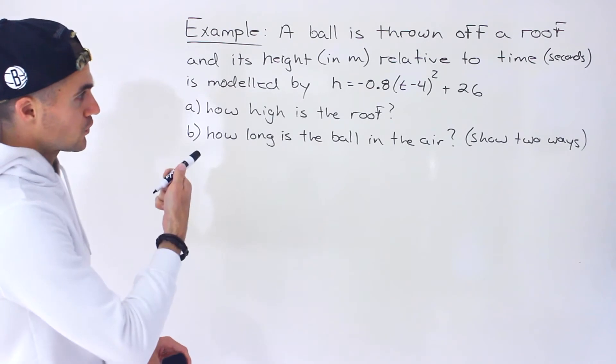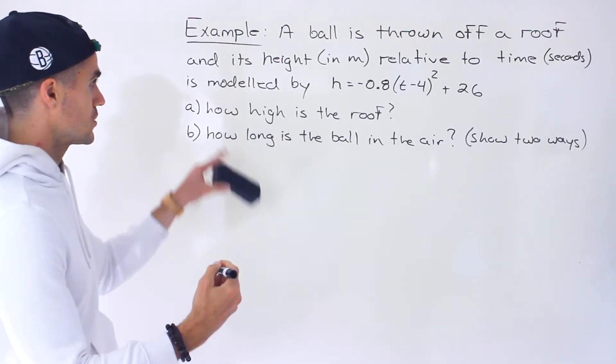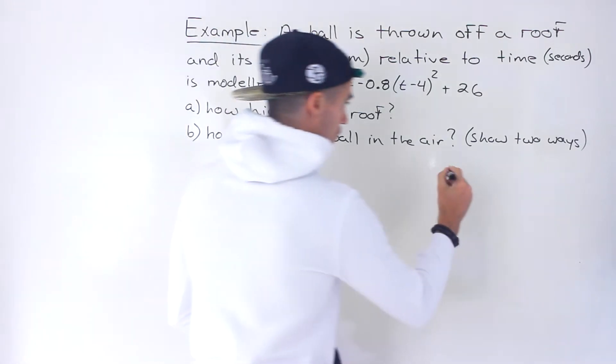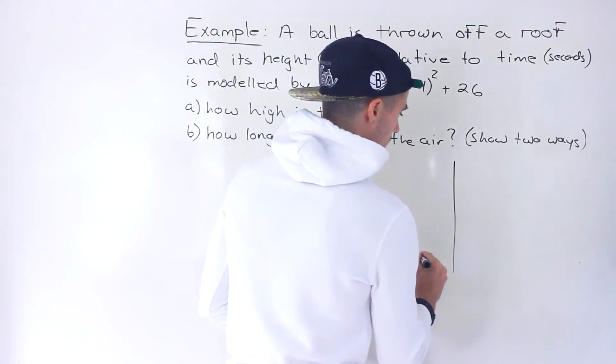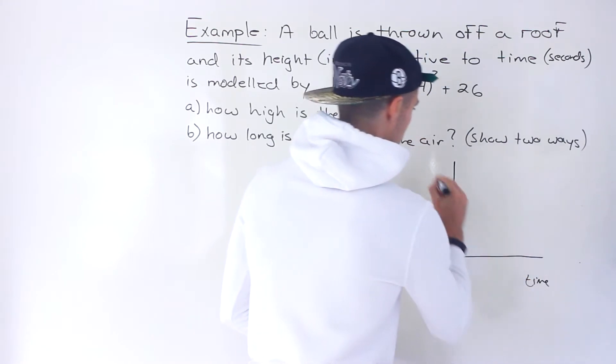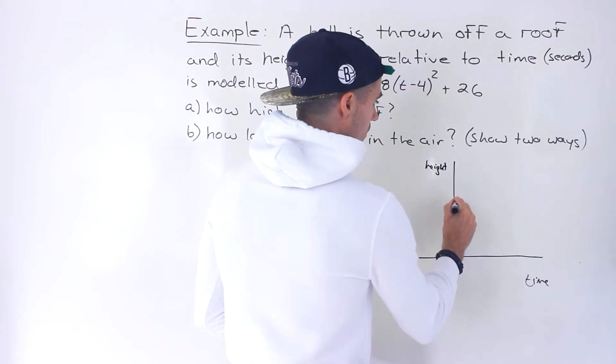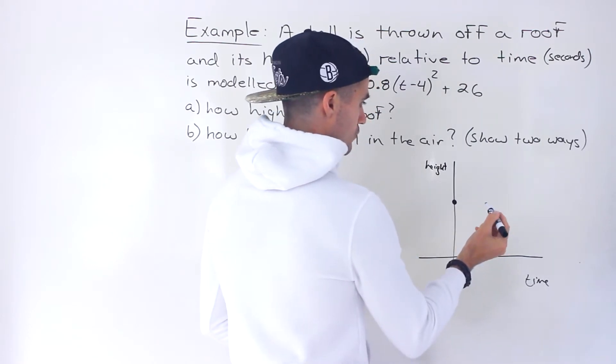Notice here we have a quadratic that's in vertex form in this particular case. So how high is the roof? Well if we start off with a drawing here, this is time and then this is height. How high is the roof going to be? It's going to be over here. That's where the ball is going to be thrown off.